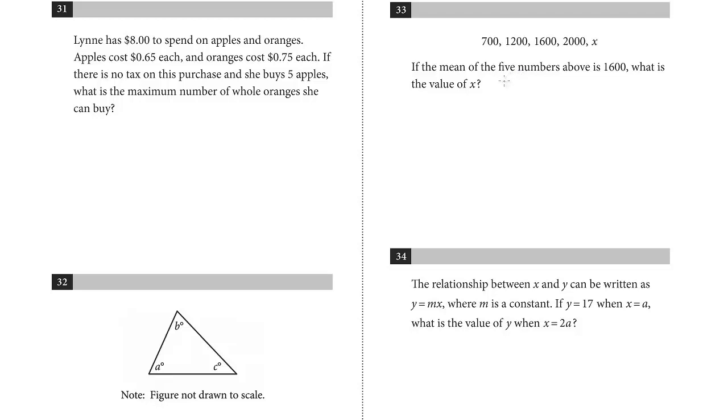In this lesson, we'll continue a review of Math Test 10, Section 4, Calculator Permitted. We're now on the grid-in section where the difficulty level resets. All right, problem 31.